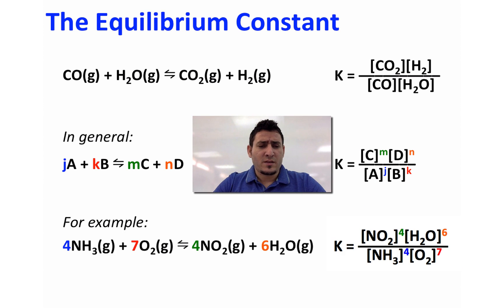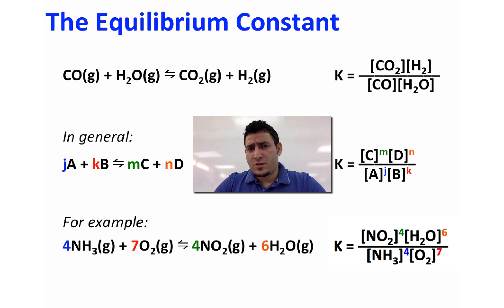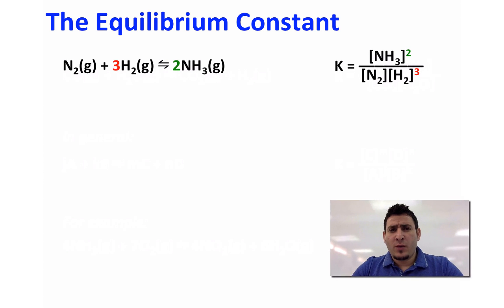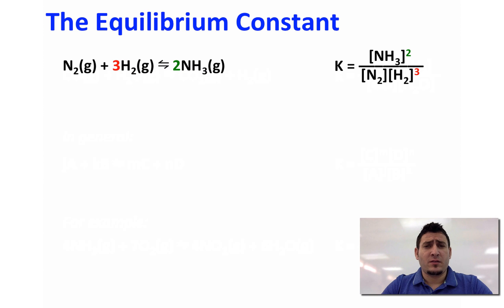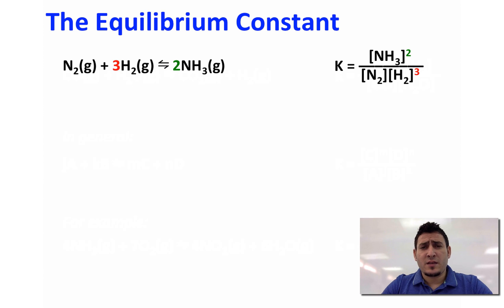For example, given the reaction 4NH₃ + 7O₂ → 4NO₂ + 6H₂O, the equilibrium constant expression is the concentration of NO₂ to the power 4 times concentration of H₂O to the power 6, divided by concentration of NH₃ to the power 4 times concentration of O₂ to the power 7. Going back to the Haber process, the equilibrium constant expression is the concentration of NH₃ to the power 2 divided by concentration of N₂ multiplied by concentration of H₂ to the power 3.